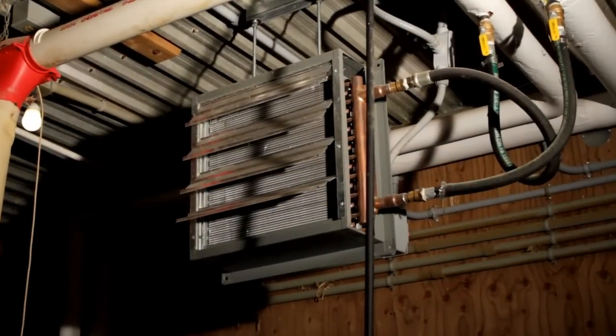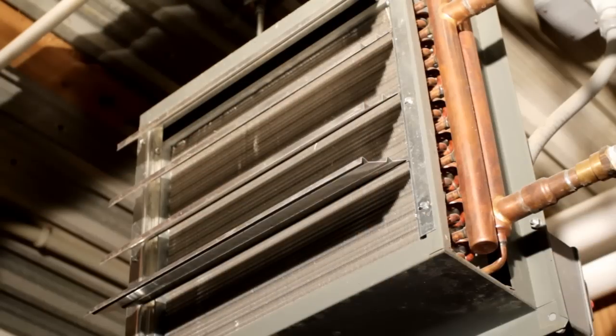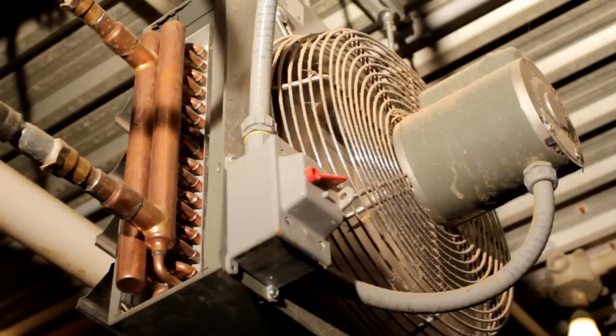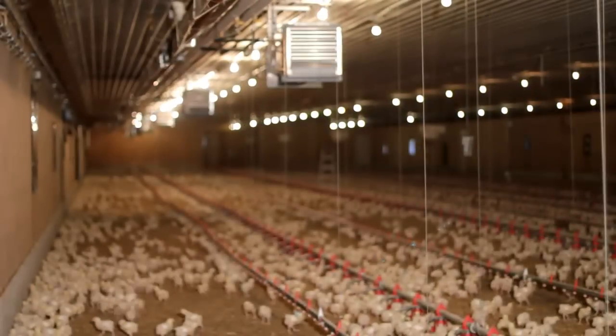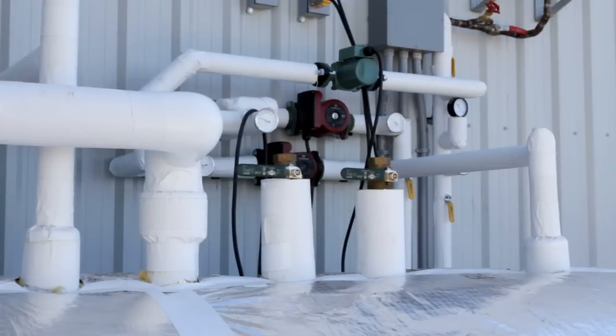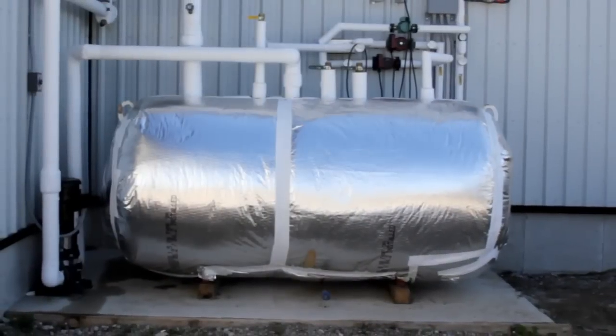The solar heated water is then distributed throughout the building by pumping the hot water through radiators with fans to produce the hot air required to heat the area. The cold water returns to the water tank to be reheated and reused.